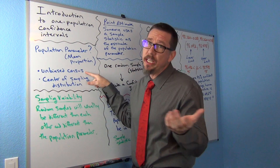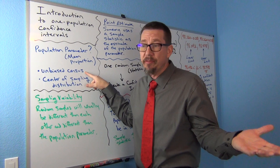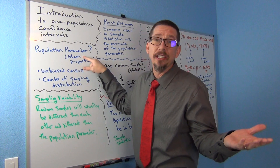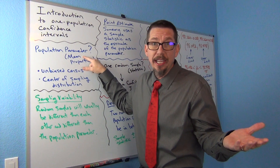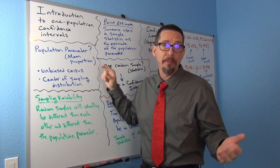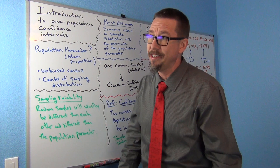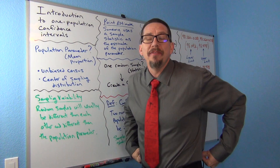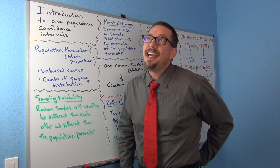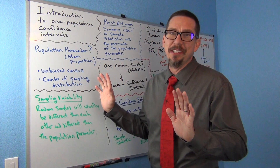One would of course be an unbiased census. If I was able to collect data from everybody in the population, I could calculate the population mean directly, or the population proportion, directly from that unbiased census. So obviously, if you have an unbiased census, you don't really need a confidence interval — you already know the population parameter.